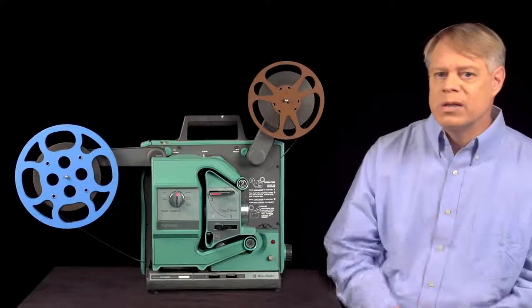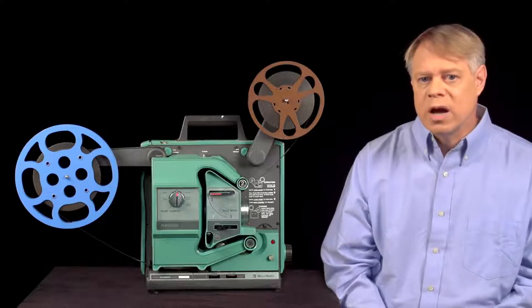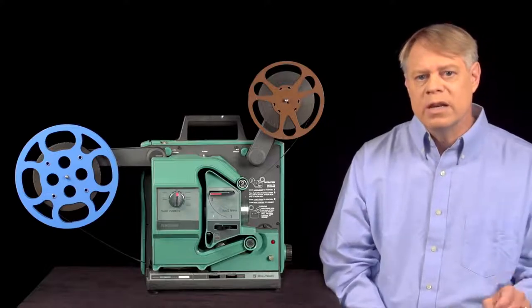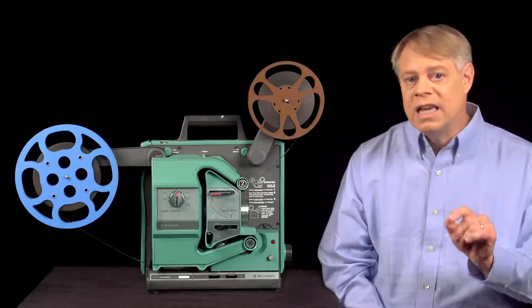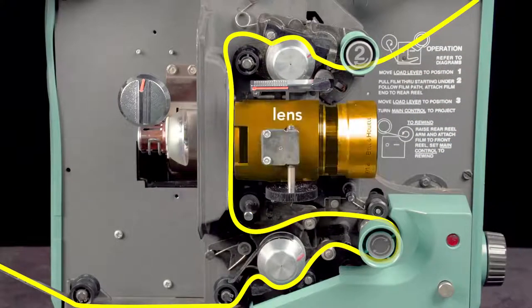A subtle but important detail of film projectors is the film loop. The loop allows for two kinds of motion of the film, intermittent and continuous. The key is they happen simultaneously. The film must pause in front of the lens to project without blur, but must also move continuously for the proper playback of the sound.